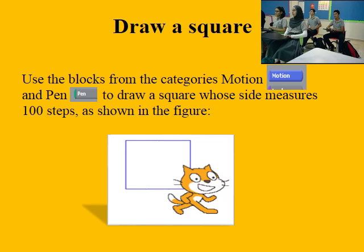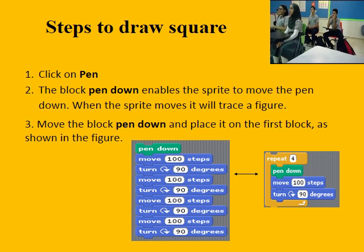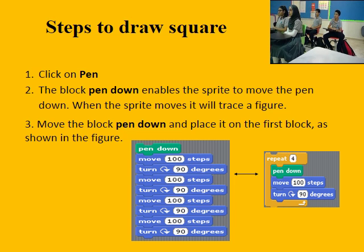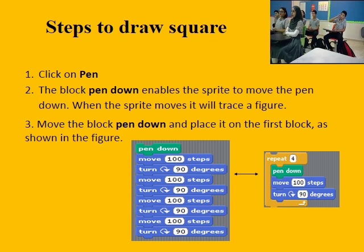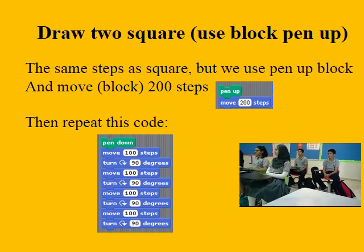Under the categories, we have motion. Each side of the square measures 100 steps, as shown in the figure. We will draw a square with 100 steps — the first side is equal to 100 steps. To draw a square, click on pen, then use the pen down block. The move and turn blocks are repeated four times, since the square is made of four equal sides. We can use the repeat block and put the number four inside it.